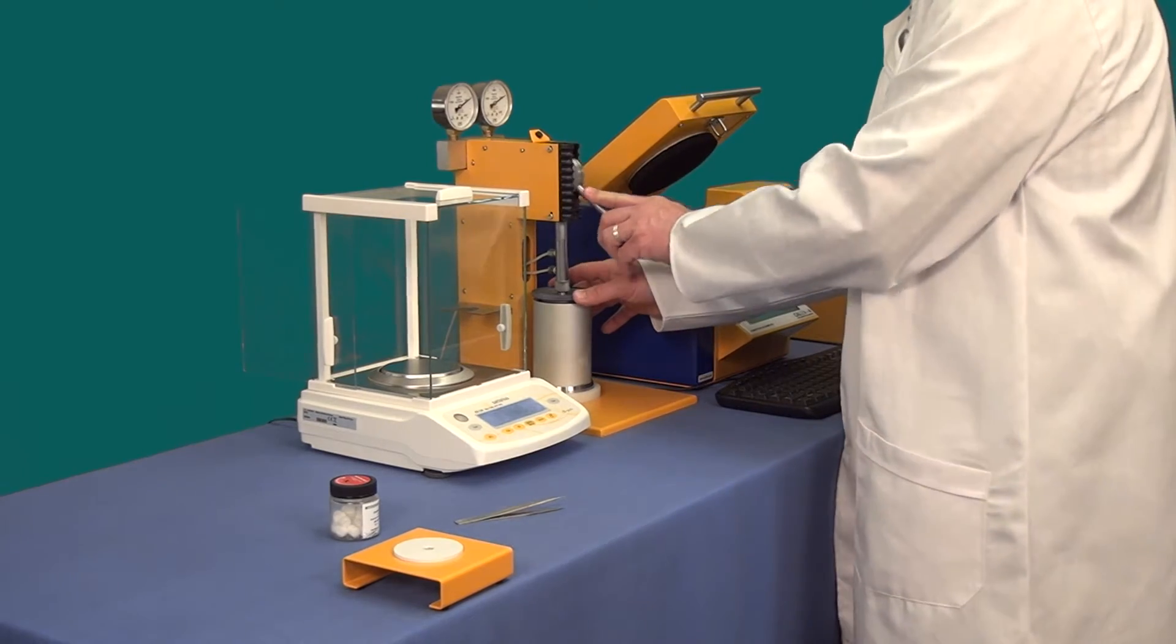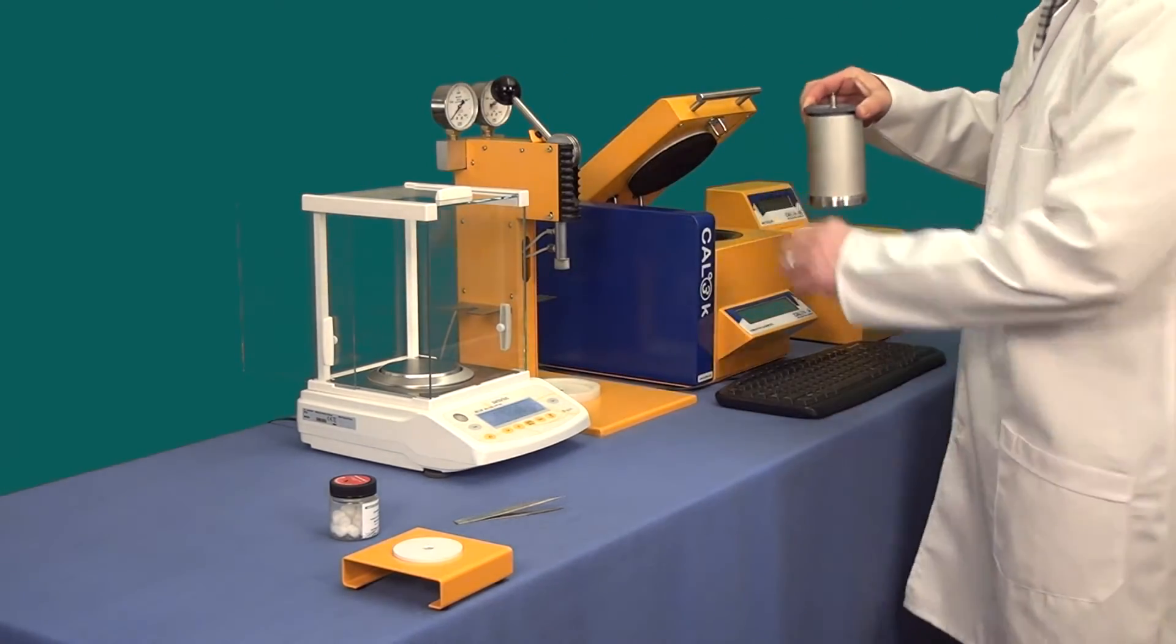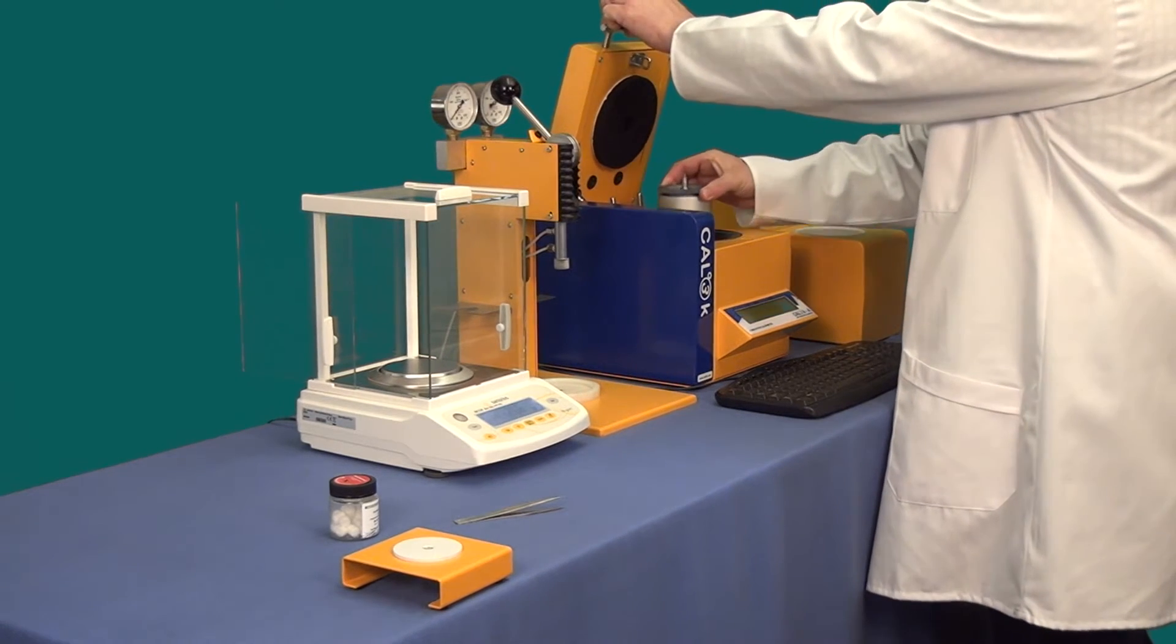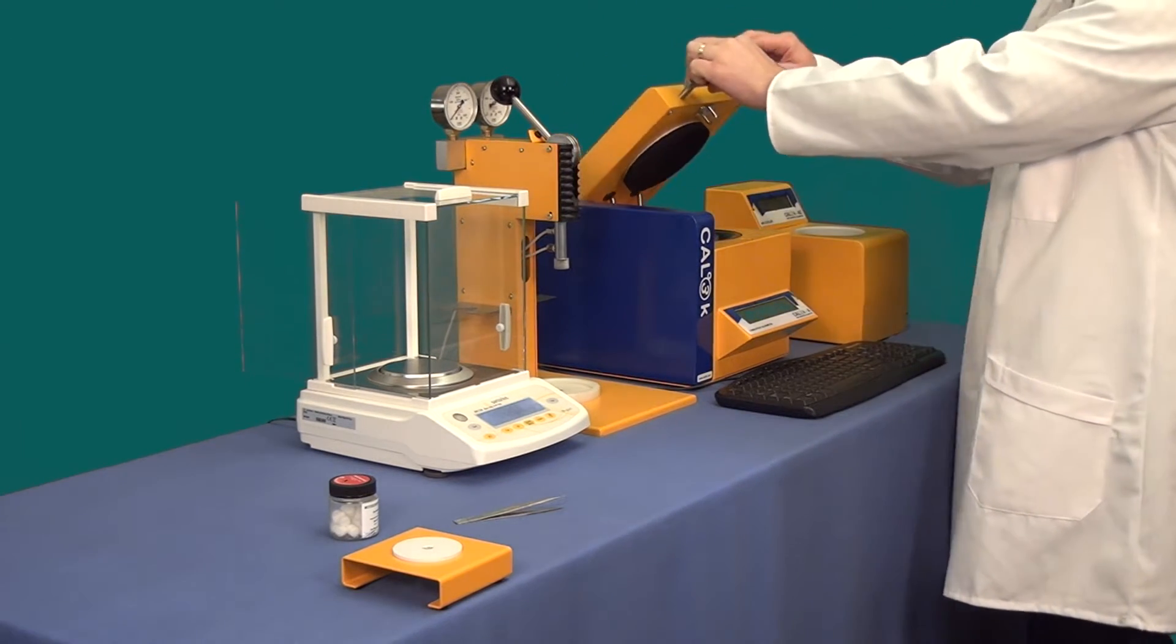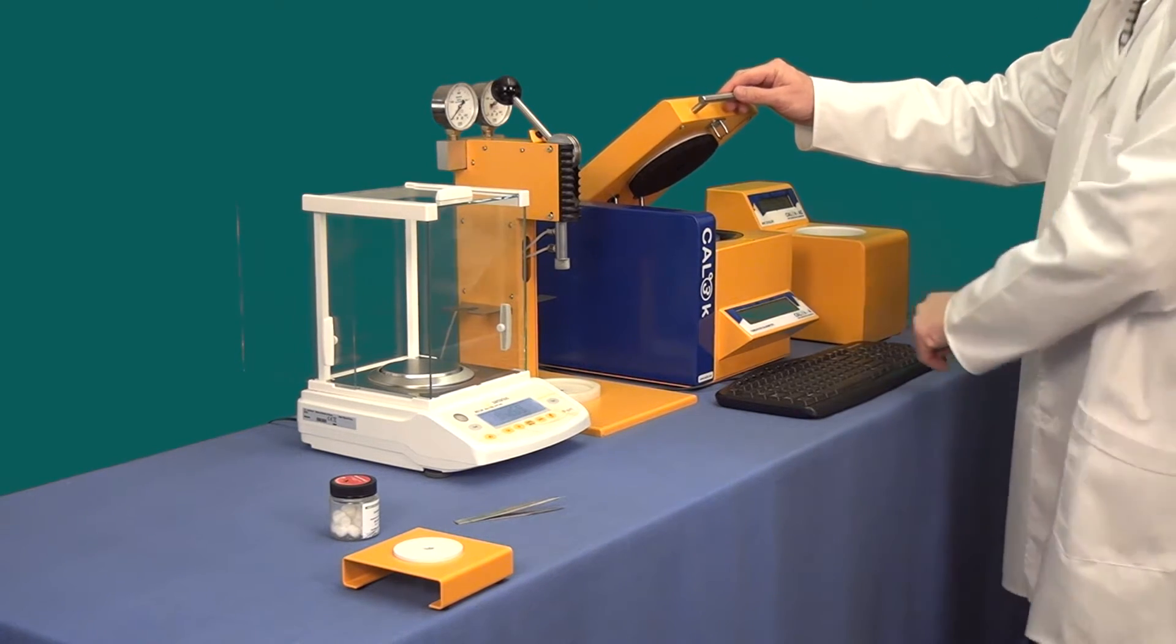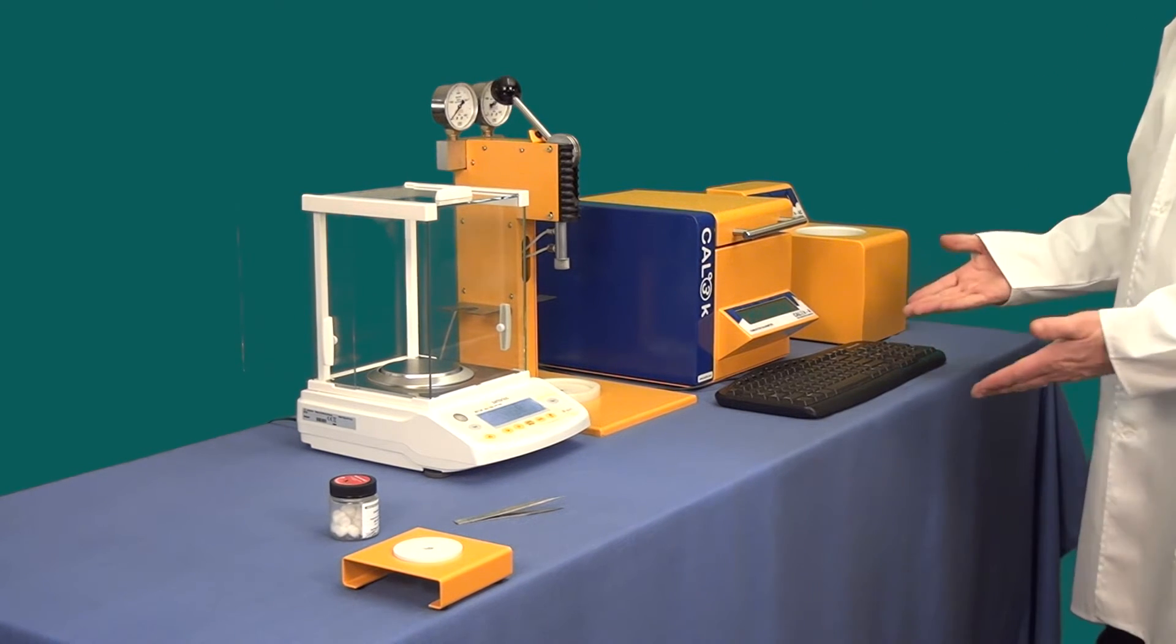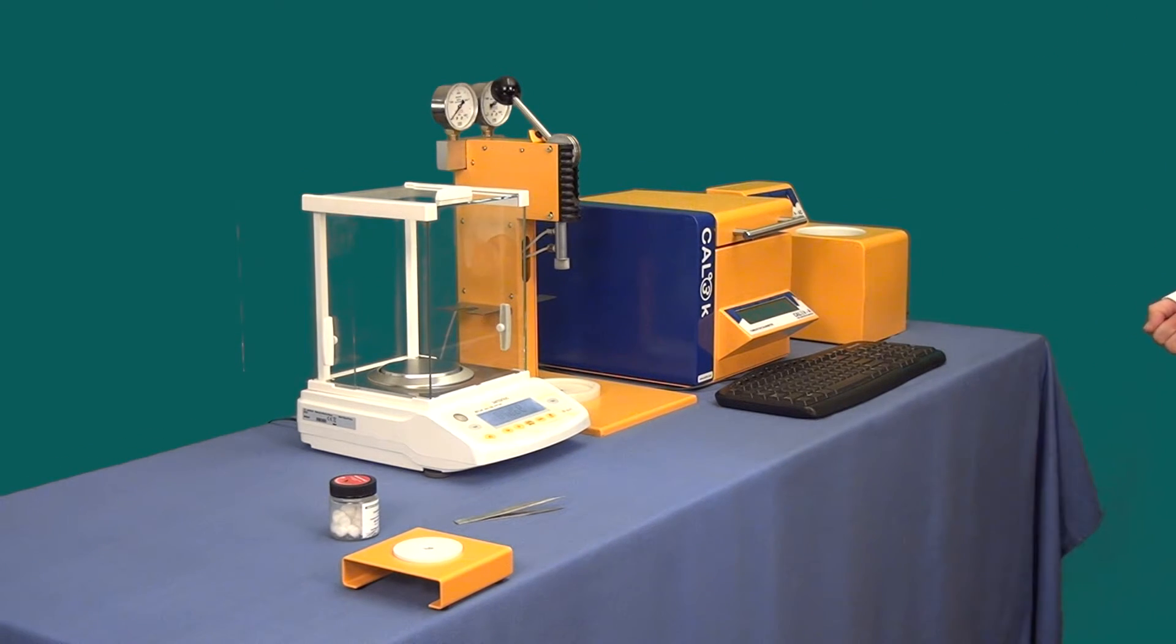Once the bomb is full, release the filling station and place the bomb into the calorimeter well. The calorimeter will give you a message telling you to close and wait. The calorimeter will now do the determination. That's all there is.